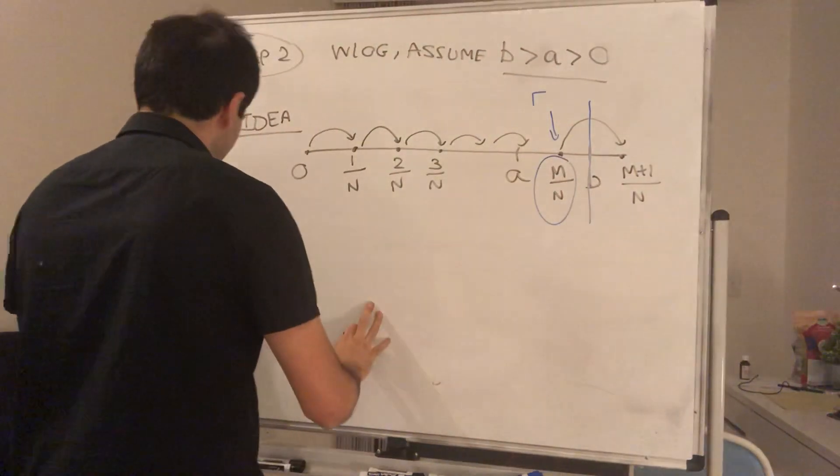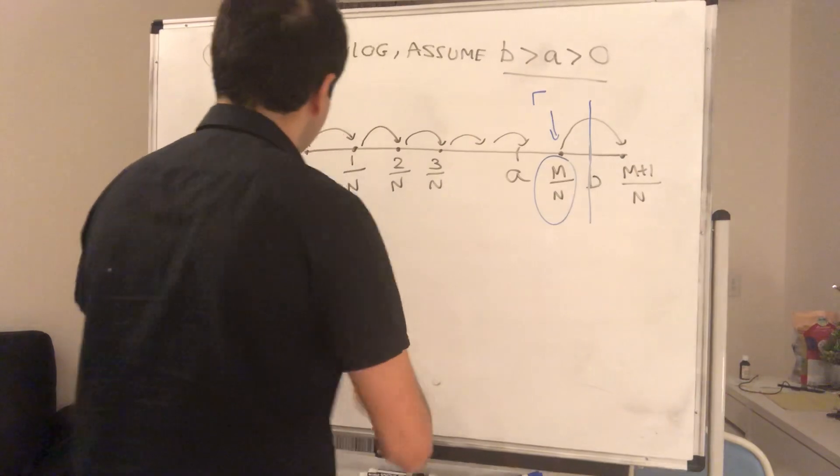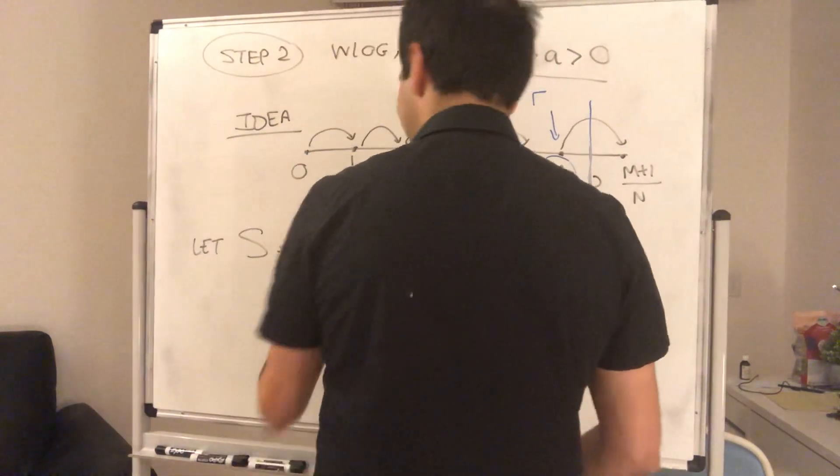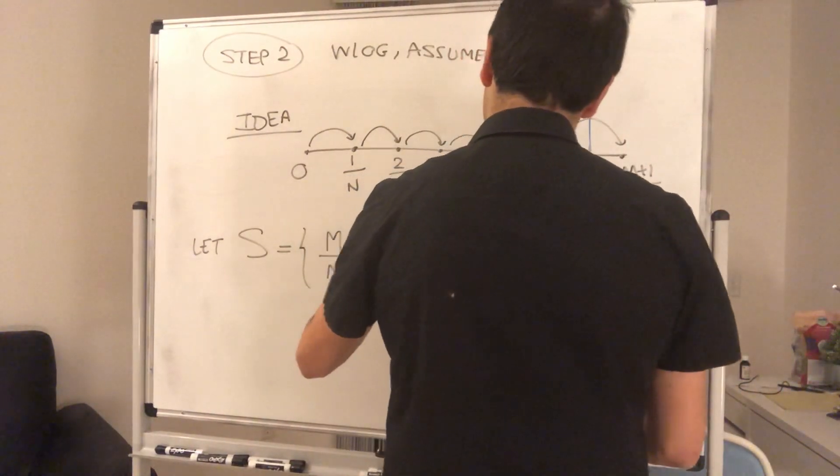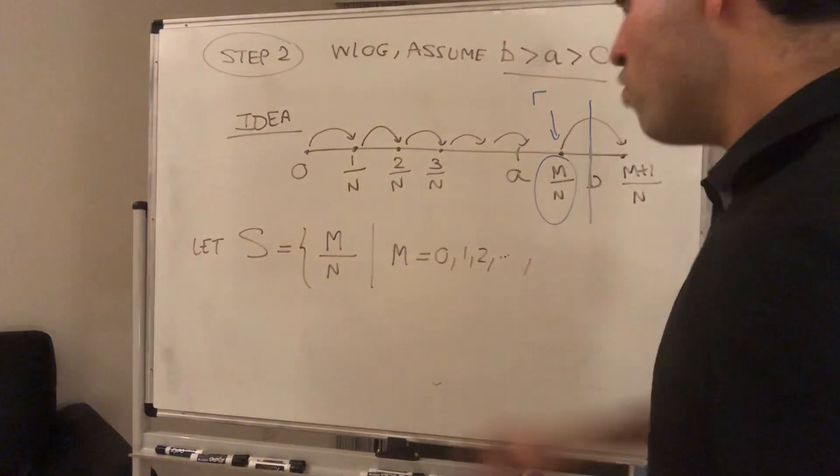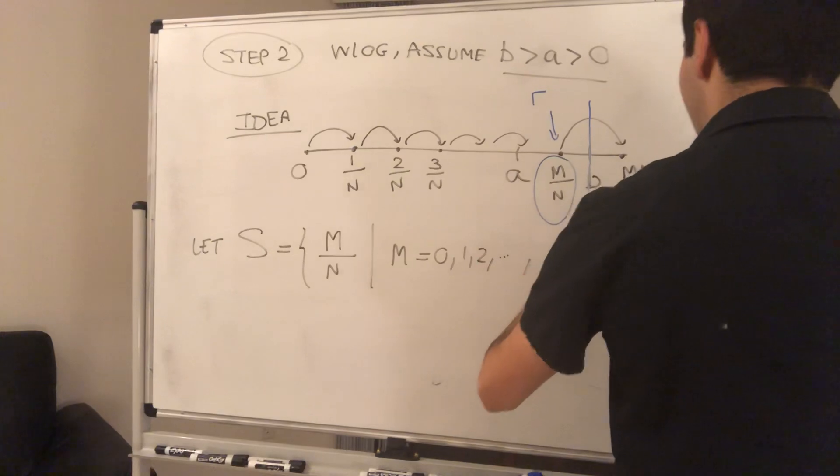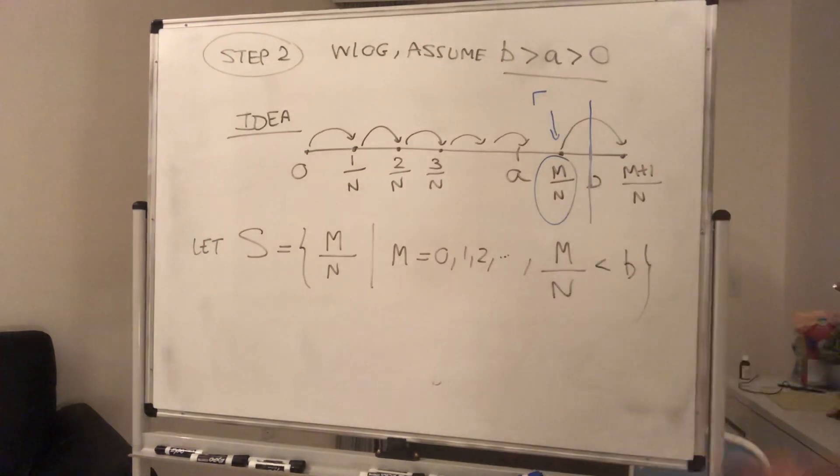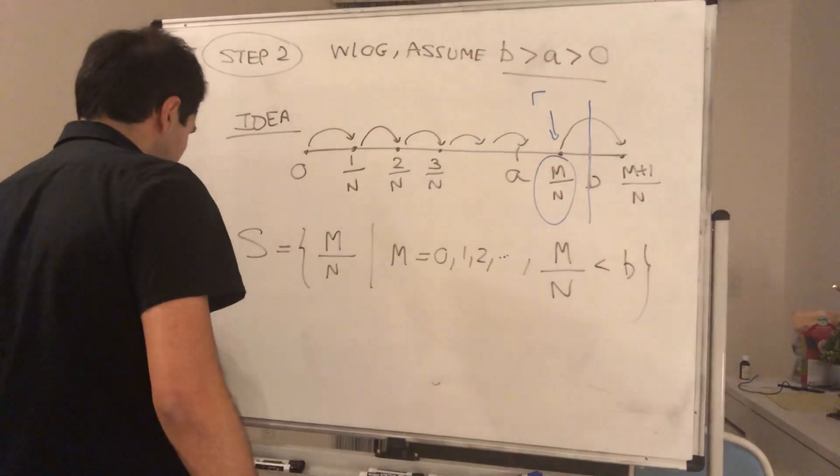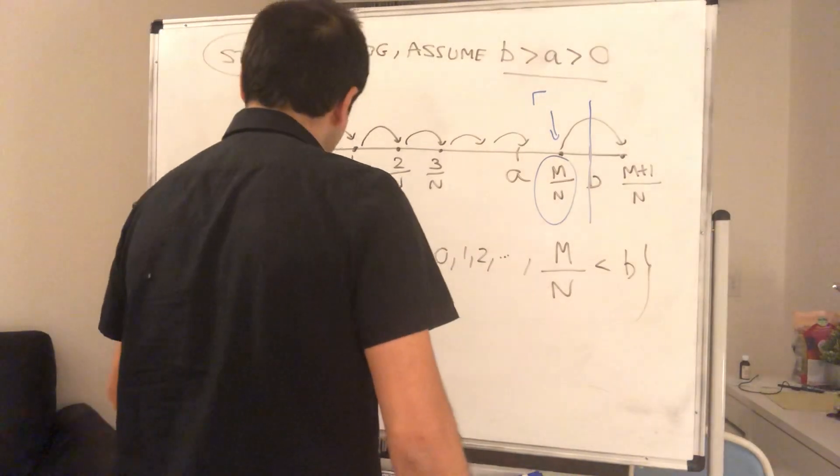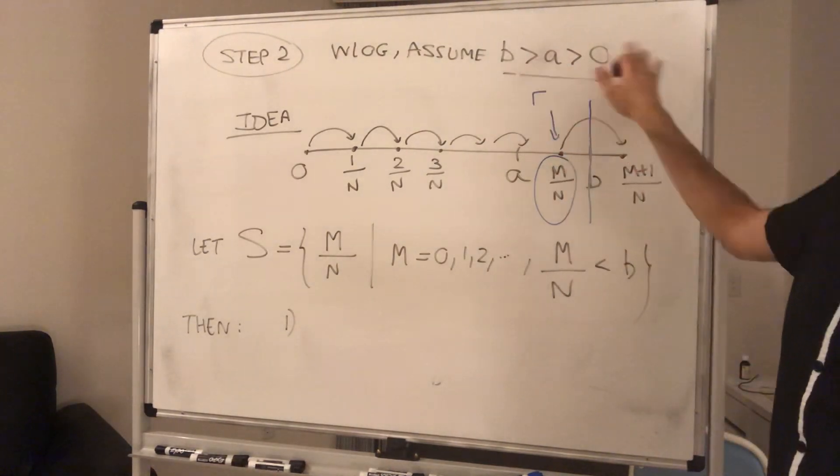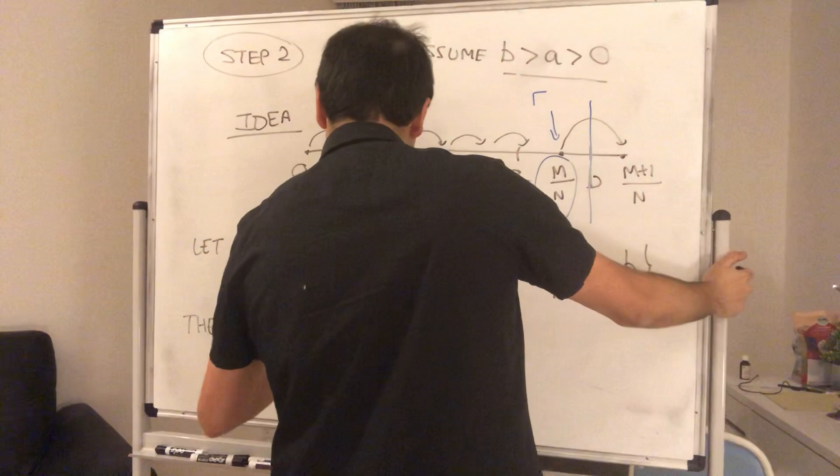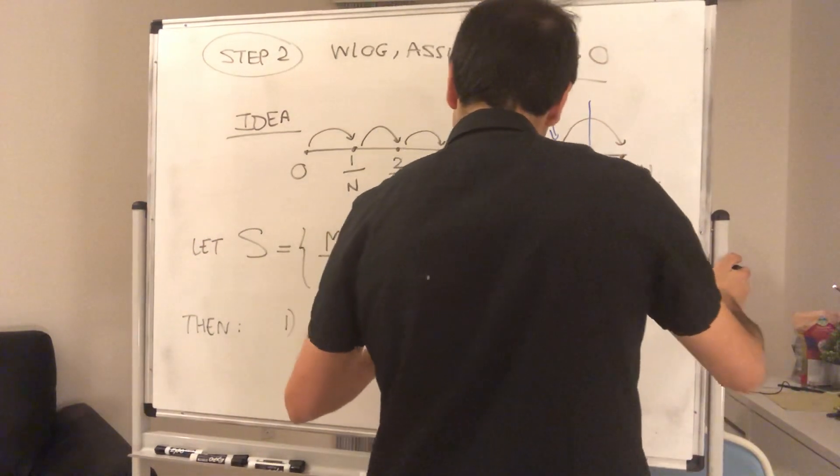So let's formalize this. So let S be the numbers of the form m over n. Again, n is fixed, think of 3. Such that m is 0, 1, 2, 3, etc. And moreover, that fraction is smaller than b. So we want to say before b. Then, what's so great about this? First of all, S is non-empty because 0 is in it because, remember, b is positive. So S is non-empty because 0 is in S.